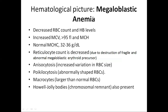The hematological picture of megaloblastic anemia: it is more common in men of middle age, whereas iron deficiency anemia was more common in people of poor socioeconomic status. There will be decreased RBC count and hemoglobin levels. However, MCV will be more than 95 femtoliters and MCH will be higher, while MCHC will be normal. Reticulocyte count is decreased due to destruction of fragile megaloblastic erythroid precursors. There will be anisocytosis, poikilocytosis, and macrocytes. Anisocytosis means increased variation in RBC size; poikilocytosis refers to abnormally shaped RBCs; macrocytes are larger than normal RBCs. Howell-Jolly bodies, which are chromosomal remnants, may also be present.